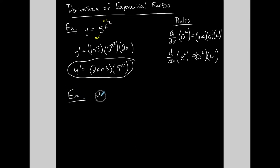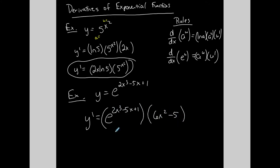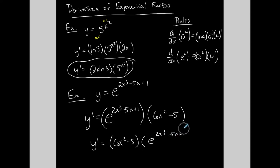Let me do one more with base e: y equals e to the 2x cubed minus 5x plus 1, and I want y prime. It follows the second rule — the base is e and u is the exponent. It simplifies because ln of e is 1, so I don't write that first part. I just copy it down and multiply by the derivative of the exponent, which is 6x squared minus 5.